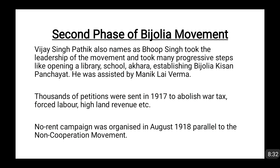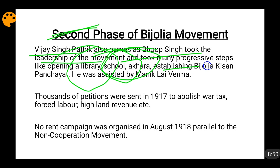The second phase of the Bijouliya movement was led by Vijay Singh Pathik, also known as Bhup Singh, who was called upon to take the leadership. He took many progressive steps: he opened schools, a library, and an Akhada, and established the Bijouliya Kisan Panchayat, which was basically a democratic-type institution. He was assisted by Manik Lal Verma.